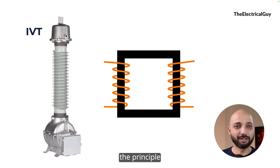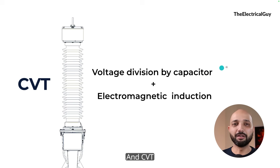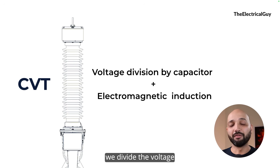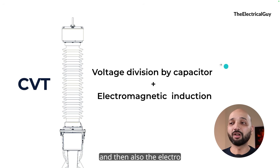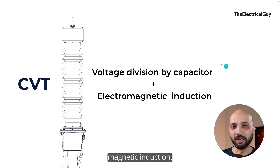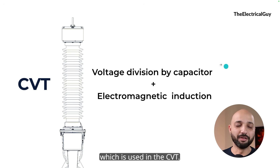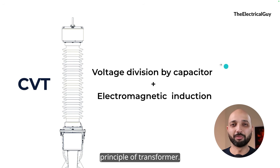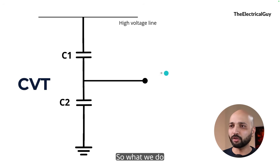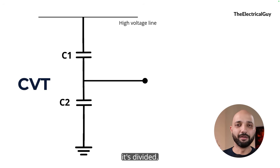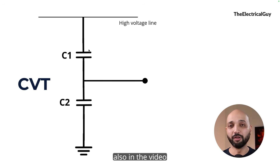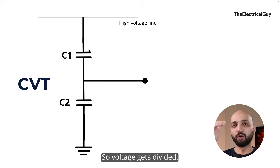When we talk about the capacitive voltage transformer, the principle is a little different. In a CVT, two principles are used: first, voltage division by capacitor, and second, electromagnetic induction. IVT uses the regular transformer working principle, whereas CVT is different. When you connect capacitors in parallel with the source, the voltage gets divided — as we saw in the simulation video.